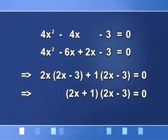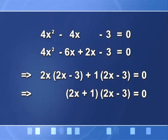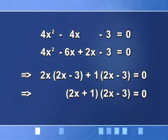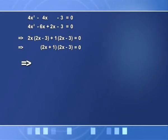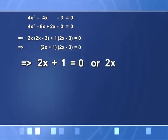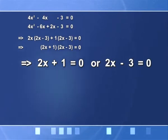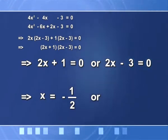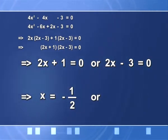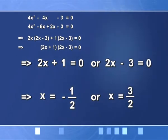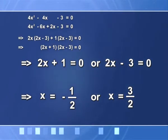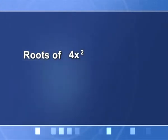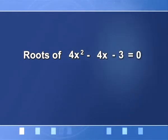When two factors multiplied together give 0, at least one of them has to be 0. So 2x + 1 = 0 gives x = −1/2, and 2x − 3 = 0 gives x = 3/2. This means −1/2 and 3/2 are the roots of the equation 4x² − 4x − 3 = 0.